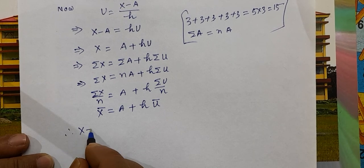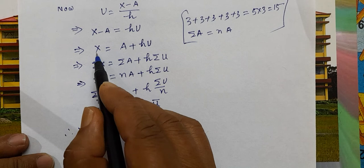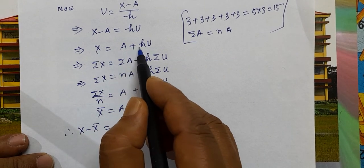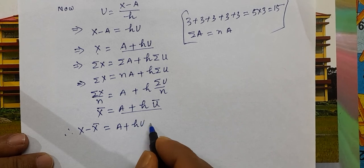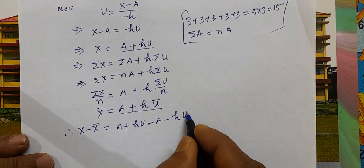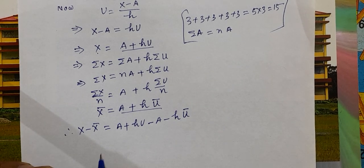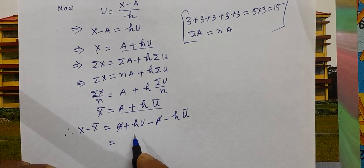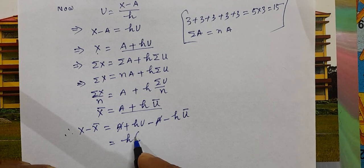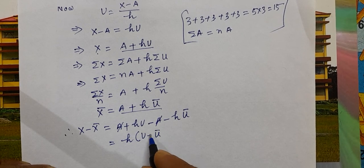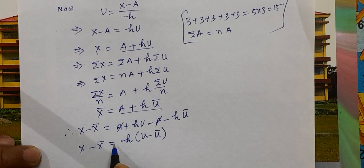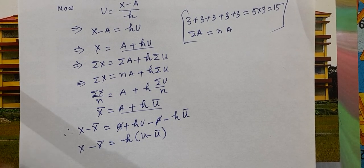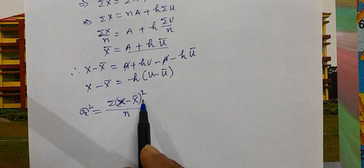Therefore, x minus x-bar equals (a plus hu) minus (a plus h·u-bar), which simplifies to h times (u minus u-bar). Here a cancels out as a constant. So we get x minus x-bar equals h times (u minus u-bar).